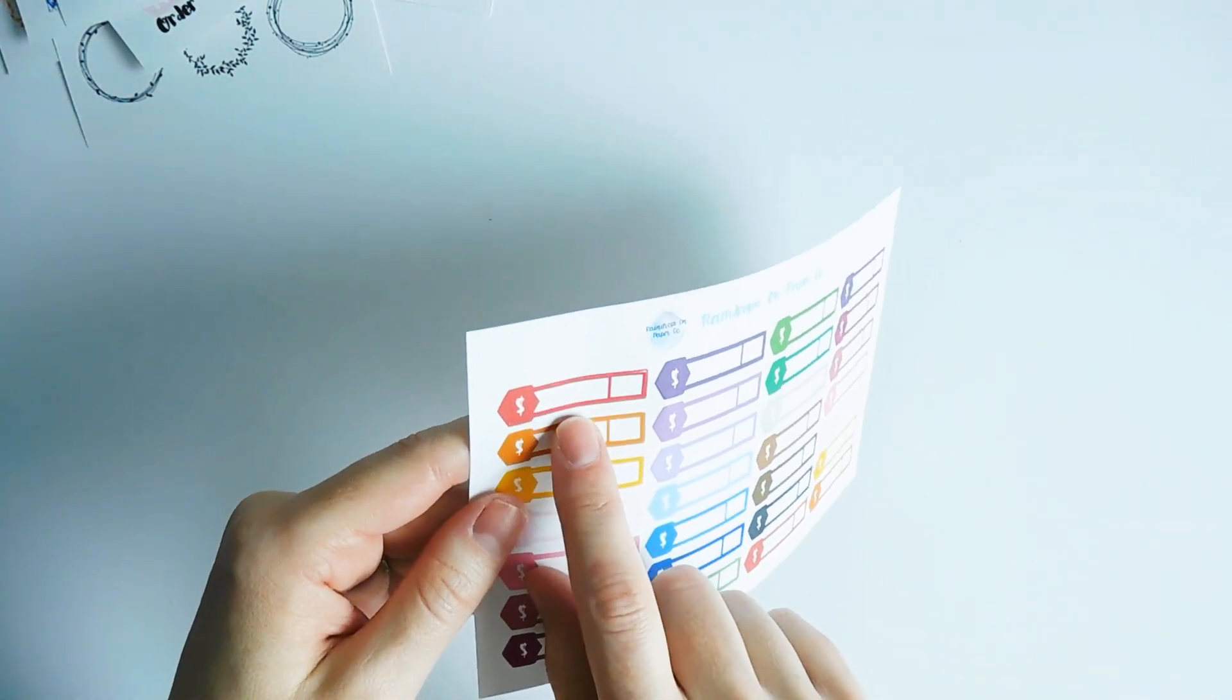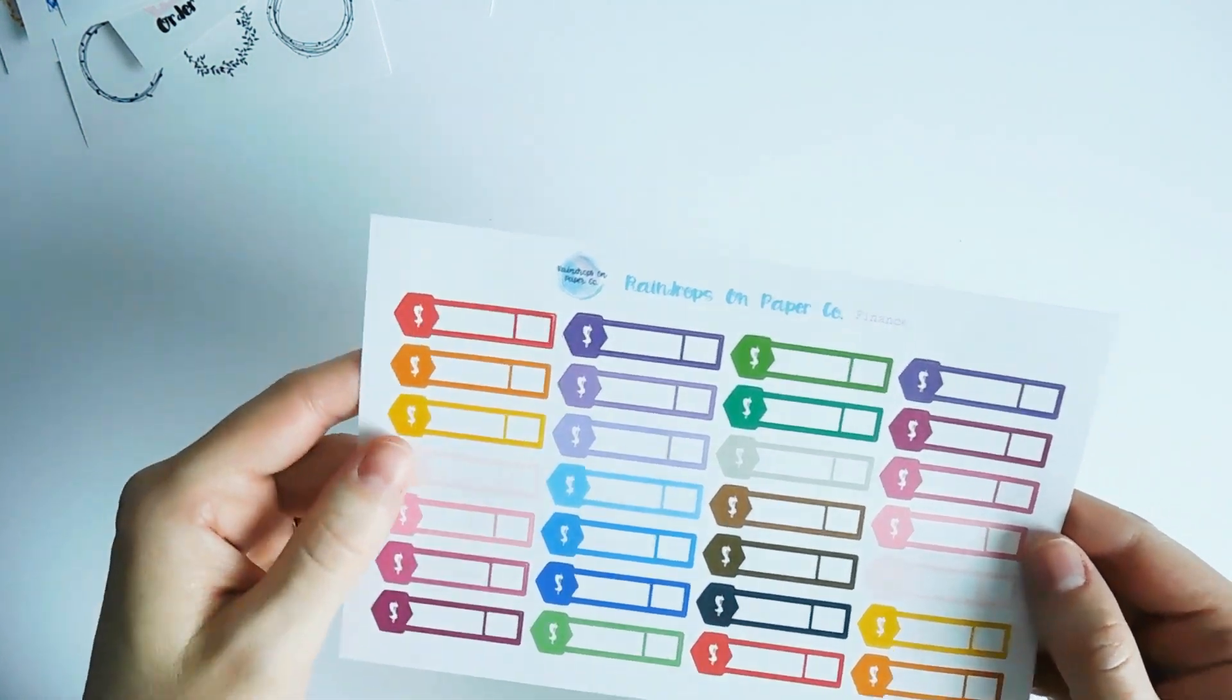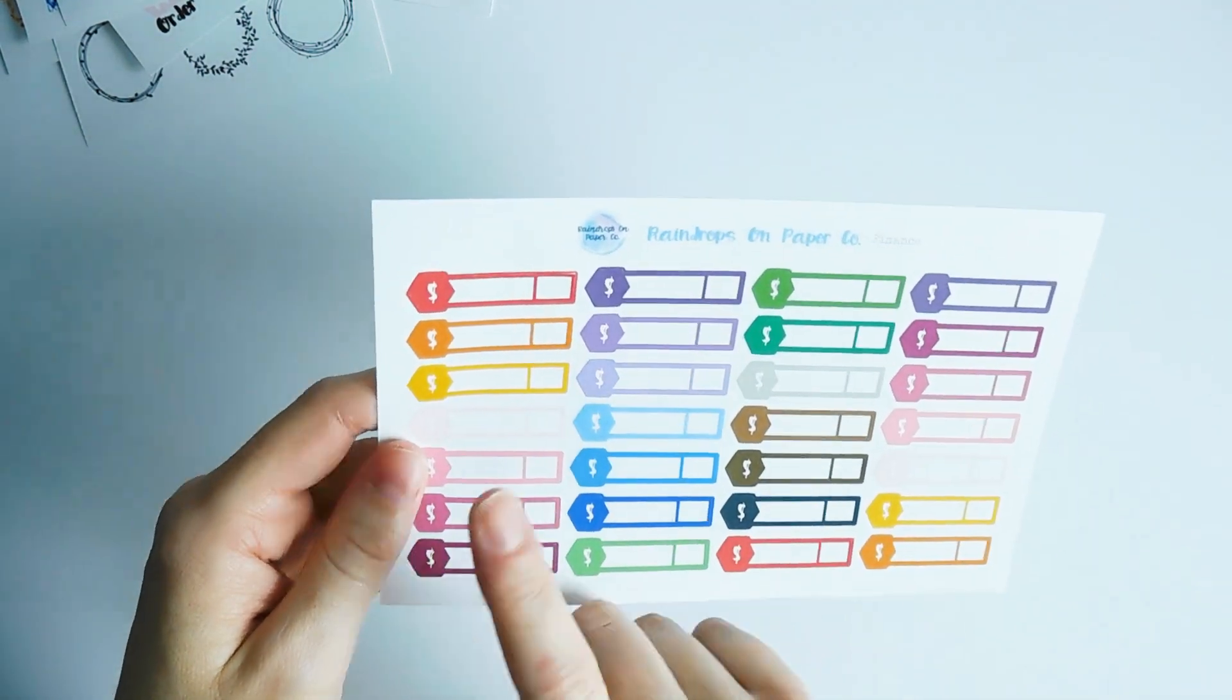So if you write what store you went to and how much you spent in the little box, or you can mark a bill by putting the name of the bill and then how much it is, and you can just check it off when it's paid.